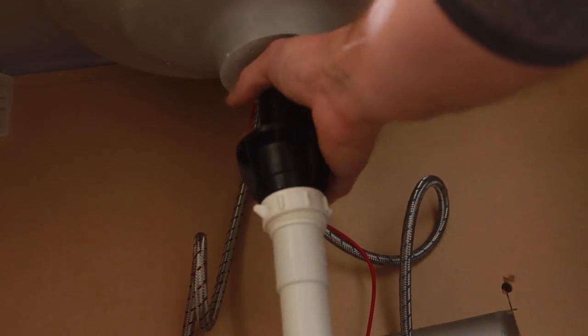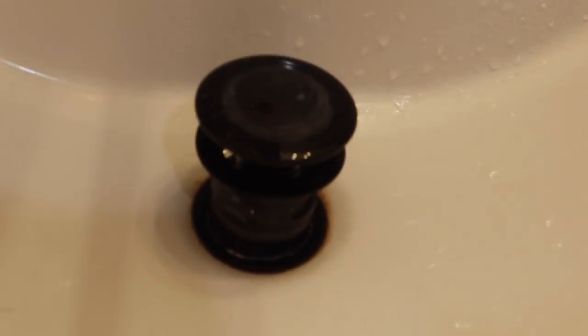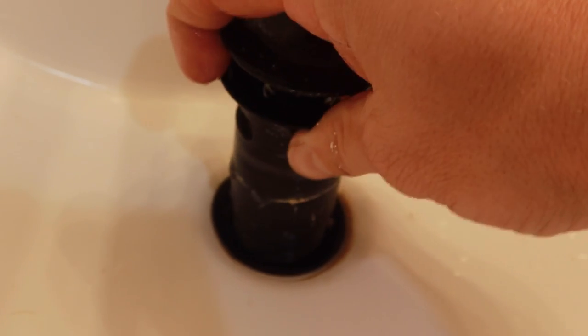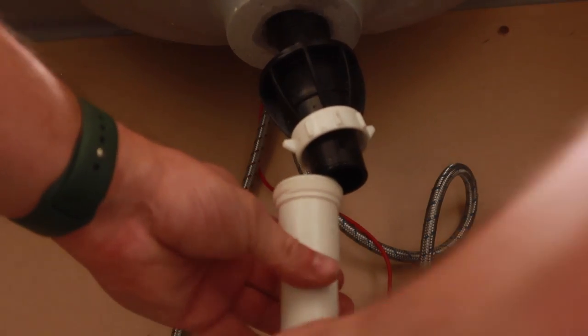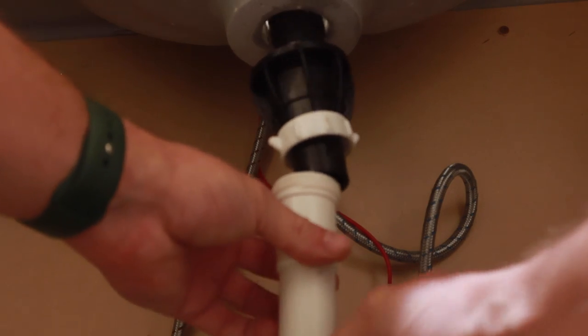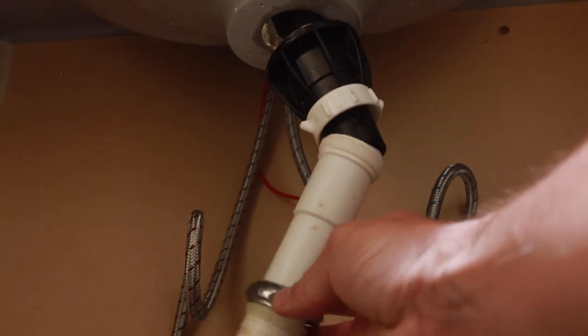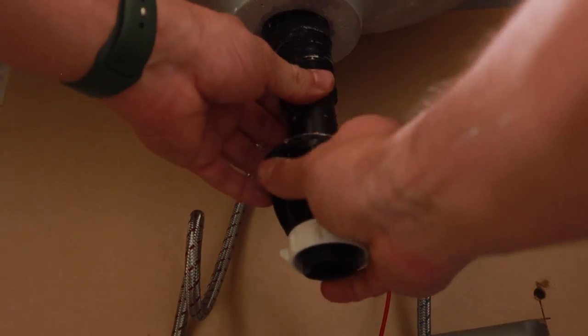From there, lift the assembly out from the top. You may have to remove some washers or something underneath that has to come off as well in order to get it out. In some cases, in older sinks, you may have to un-thread your drain assembly actually from the top. It just depends on your particular setup and how old your sink is.